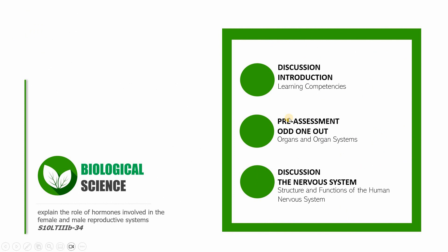For this session of Grade 10 Biology, we were able to finish the following: first, a discussion about the introduction of the learning competencies; second, a pre-assessment identifying the odd organ out from four groups of organs; and last, a discussion about the nervous system — its two main divisions, the central nervous system and the peripheral nervous system. This is SirCJ, and I hope to see you in the next video lesson for Grade 10 Biology.